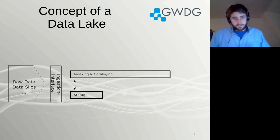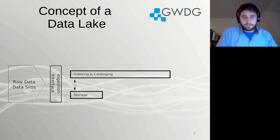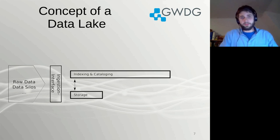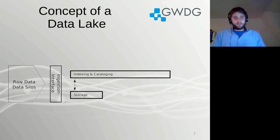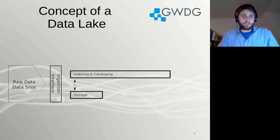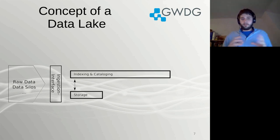To prevent such a data swamp, it's very important that each piece of data which ends up in storage needs to be indexed in a central data catalog. Since domain researchers will work with this data lake, this indexing should also include a lot of semantic information — domain-specific information which describes the data in a language native to the researcher. With this, you already have a basic raw data repository.